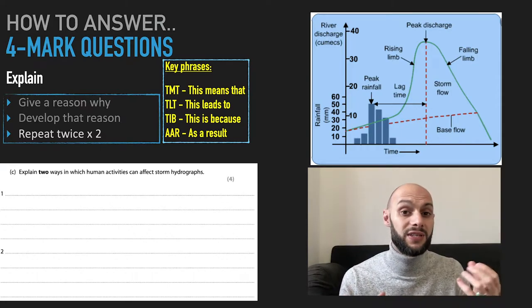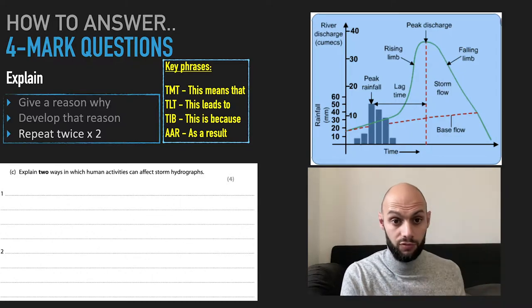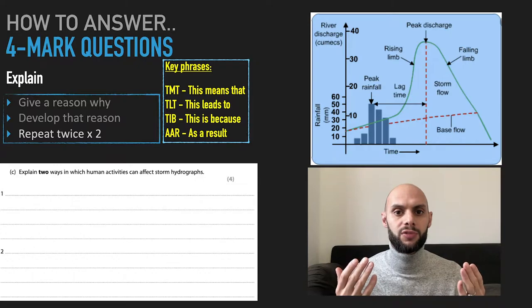Why? Because if it's fast, that's going to increase the risk of flooding. So if water goes from rain falling into the river very quickly, it's going to increase the risk of flooding.